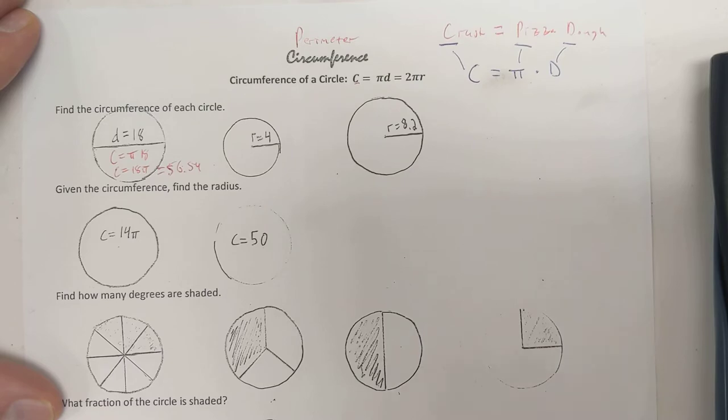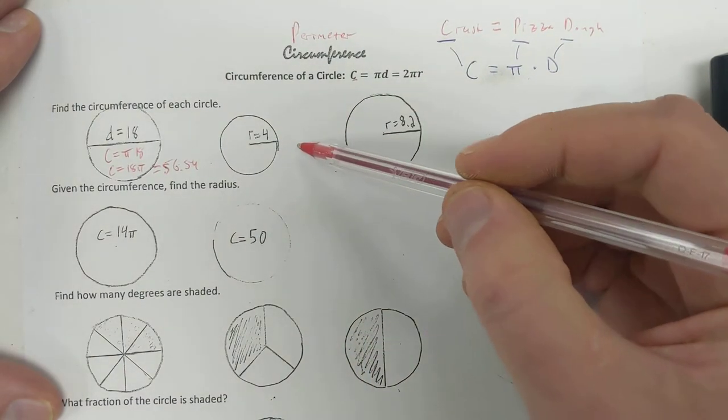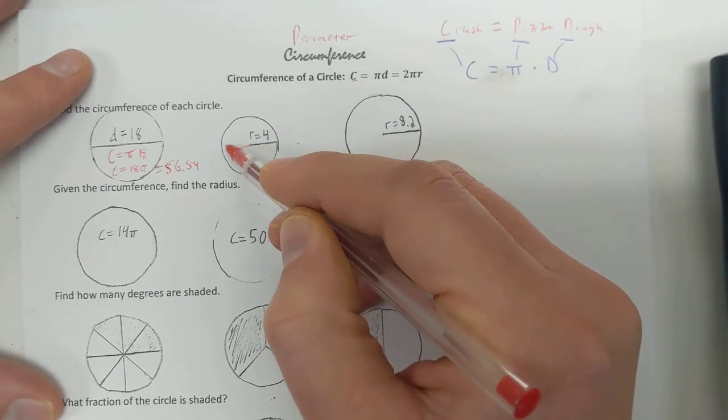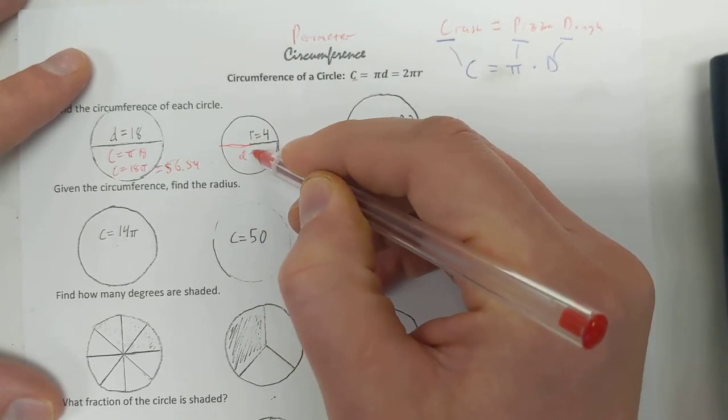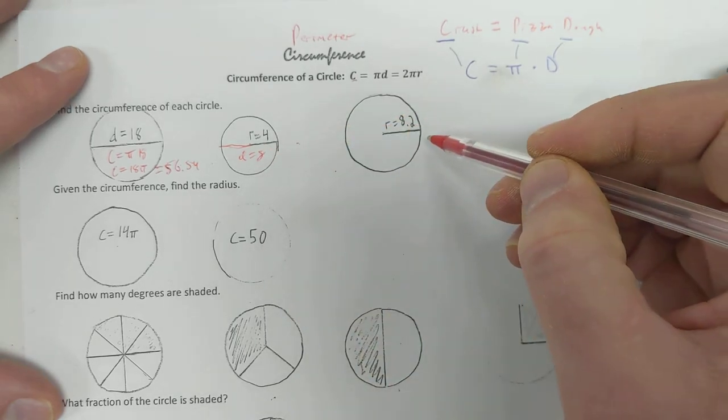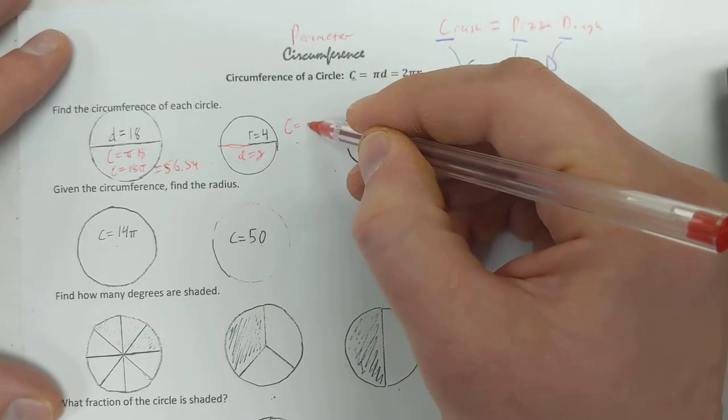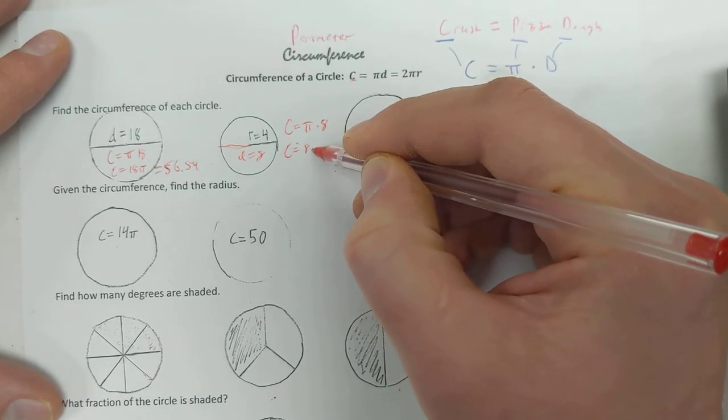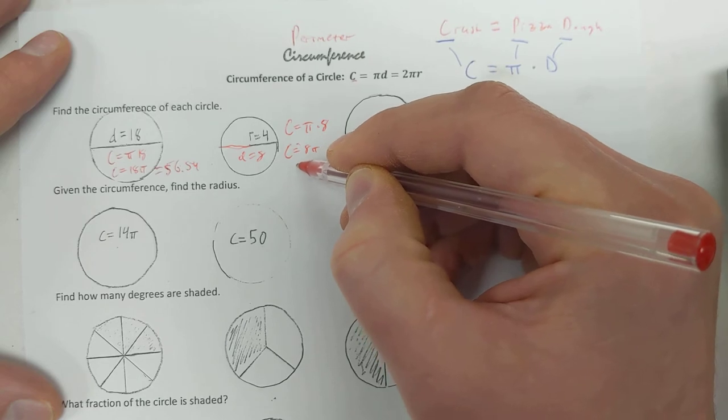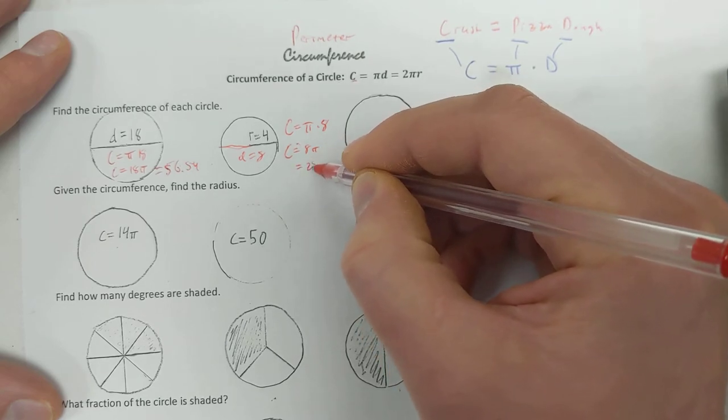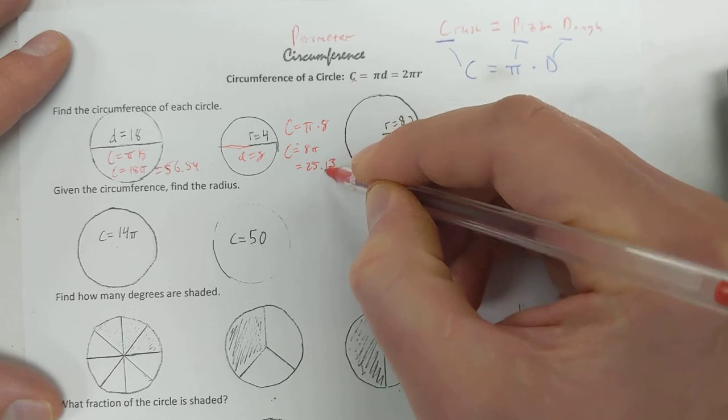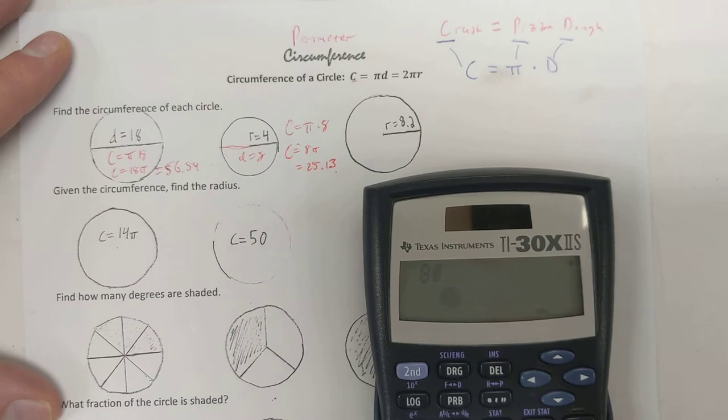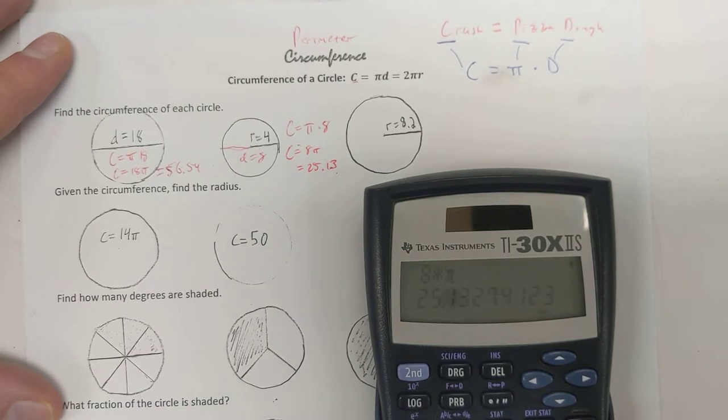The next one, well, we got the radius here. So to find the diameter, I'm going to have to double that. So the diameter is 8. So the circumference is going to be pi times 8. And we could just write this as 8 pi, or you can actually use your calculator and multiply it out, and you get 25.13. There we go.